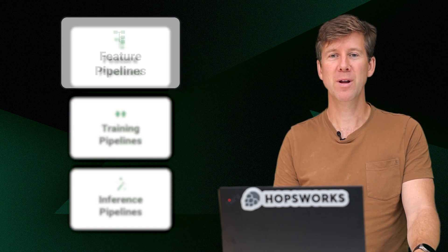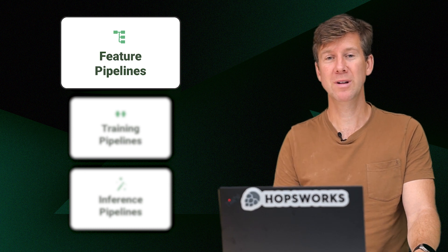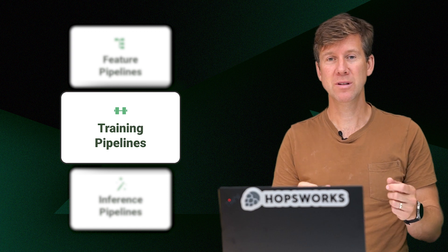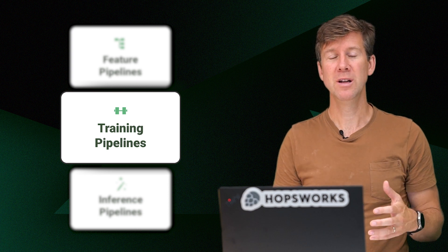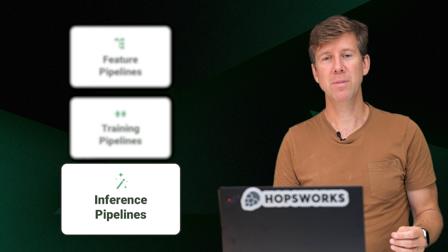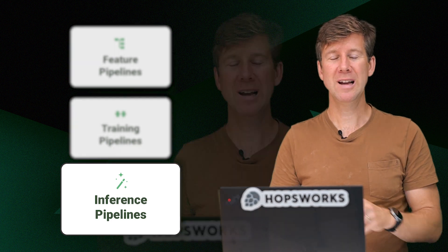The feature pipeline we're going to talk about will be used to create features from some raw input data. The training pipeline will take those features and labels, if we have a supervised machine learning model, to create a model. And then finally an inference pipeline will take new data and the model and make predictions. Together that will make up our machine learning system.